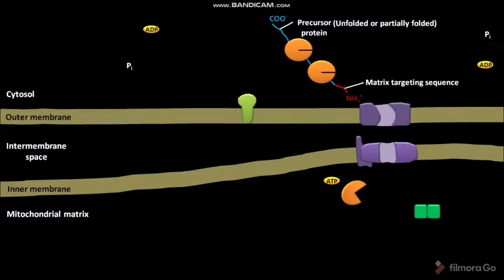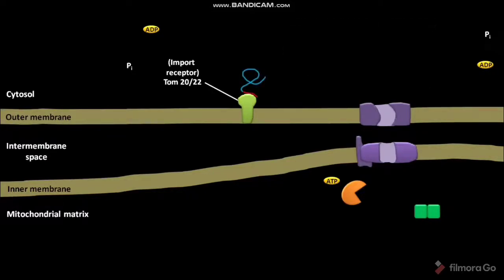The outer membrane of a mitochondrion has a TOM20 or TOM22 protein, called the import receptor. The precursor protein then binds to the TOM20 or TOM22 protein by its matrix targeting sequence near a site of contact with the inner membrane. TOM20 or TOM22 recognizes the matrix targeting sequence in the precursor protein.